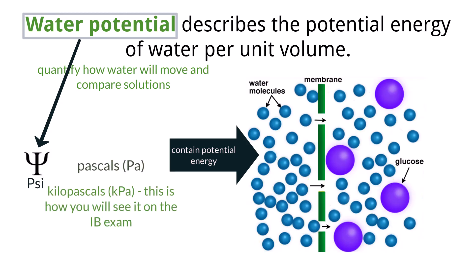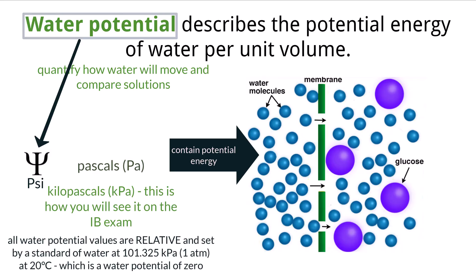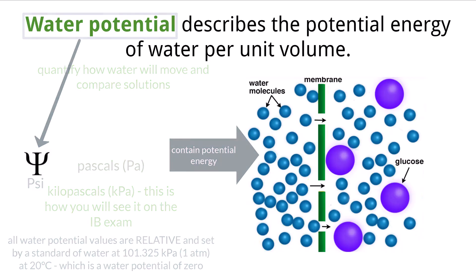Measurements of water potential are all relative to a standard set by pure water at standard atmospheric pressure, which is 1 atmosphere or 101.325 kilopascals, at 20 degrees Celsius. The water potential at these variables is zero and is what all other water potential values are compared to.